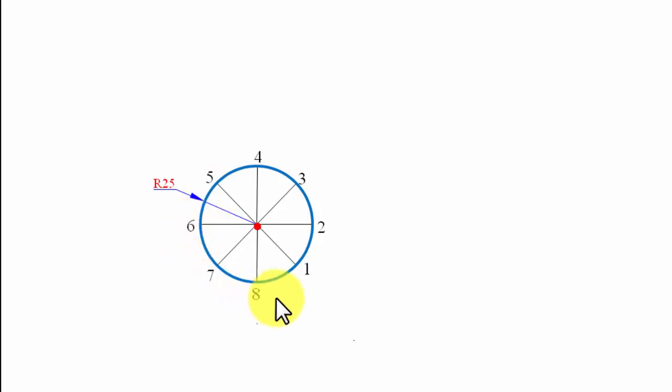We know what the circumference is, so let's right now draw a straight line which is equivalent to the circumference. The circumference has been given to us as 157 mm. Now we need to divide this line into eight equal parts.